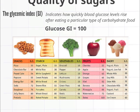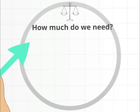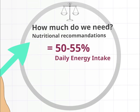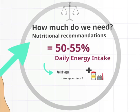How much do we need? Carbohydrates should make up between 50–55% of our daily energy intake, favoring in particular the consumption of complex carbohydrates in the form of starch found in pasta, potatoes, and bread. There is no upper limit for added sugar, but the current WHO recommendation, which is under revision, is to not exceed 10% of total dietary energy intake.